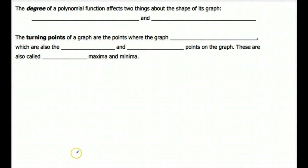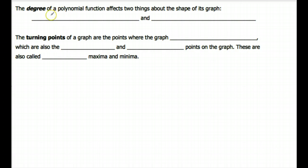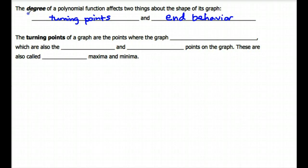So that first part of the video was about some Algebra 1 vocabulary. In this next part, we're going to talk about some new concepts — specifically, how to tell what the shape of the graph is going to be based on what the equation looks like. We're going to look at two things on all these graphs: what are called turning points, and what is called end behavior of a graph. We can use the degree of the equation to tell what is going on with both of these things on the graph.